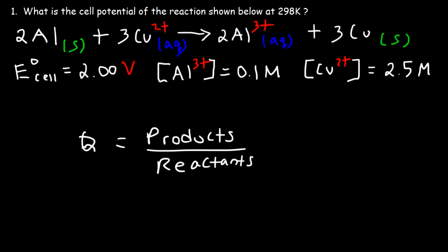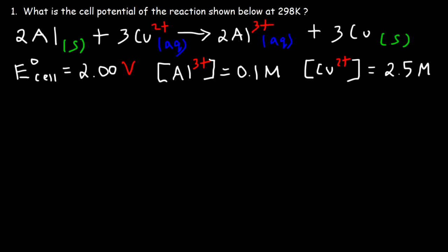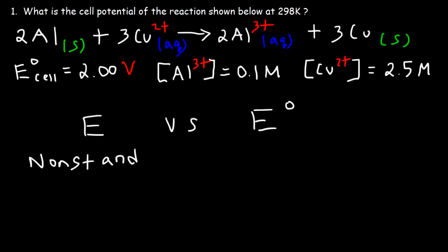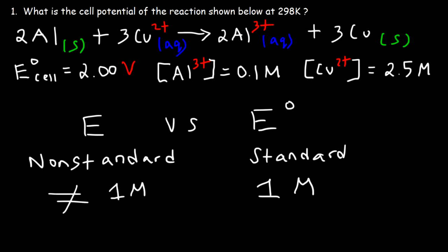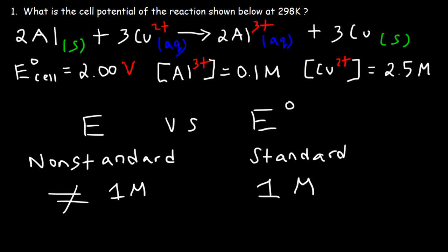Q is calculated the same way as K, but Q uses initial concentrations as opposed to equilibrium concentrations. E represents the non-standard cell potential, whereas E° represents the standard cell potential. At E°, all ion concentrations are 1 mole per liter. For non-standard E, the concentrations do not equal 1 M — for example, aluminum is 0.1 and copper 2+ is 2.5, so the cell potential will change.